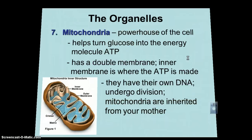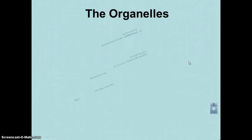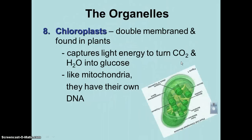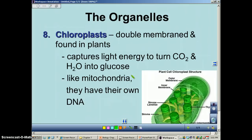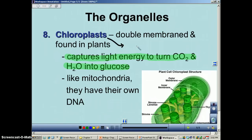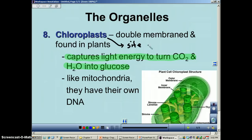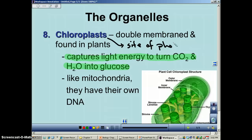Our next organelle is very similar — it's the chloroplast. Chloroplasts and mitochondria are cousins because they have a lot of features in common. The chloroplast is the site of photosynthesis. During photosynthesis, the plant will capture light energy and use that energy to turn CO2 and water into glucose. Just like mitochondria, chloroplasts also have their own DNA.